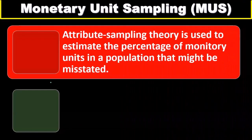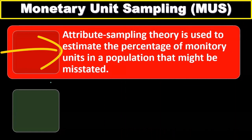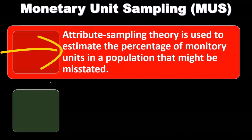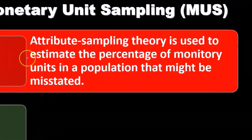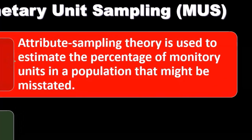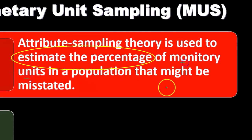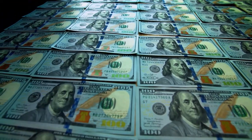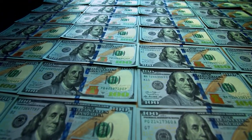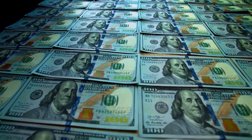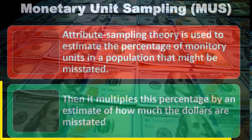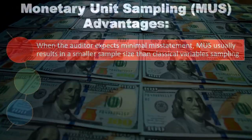With monetary unit sampling, attribute sampling theory is used to estimate the percentage of monetary units in a population that might be misstated. That's where the monetary element comes into play — estimating the percentage of dollar amounts in a population that might be misstated. Then it multiplies this percentage by an estimate of how much the dollars are misstated.